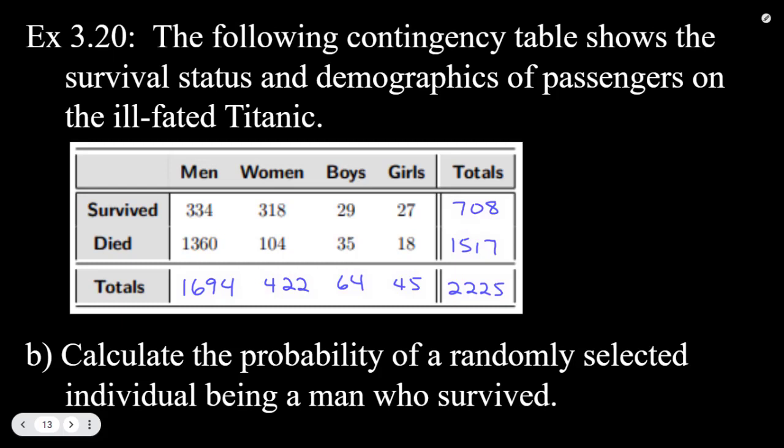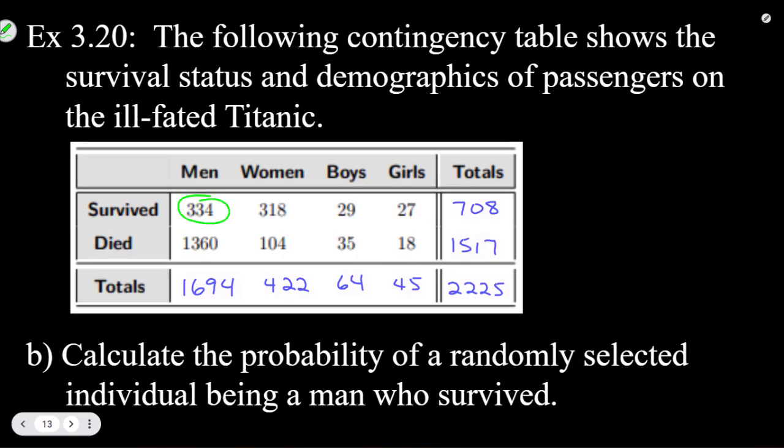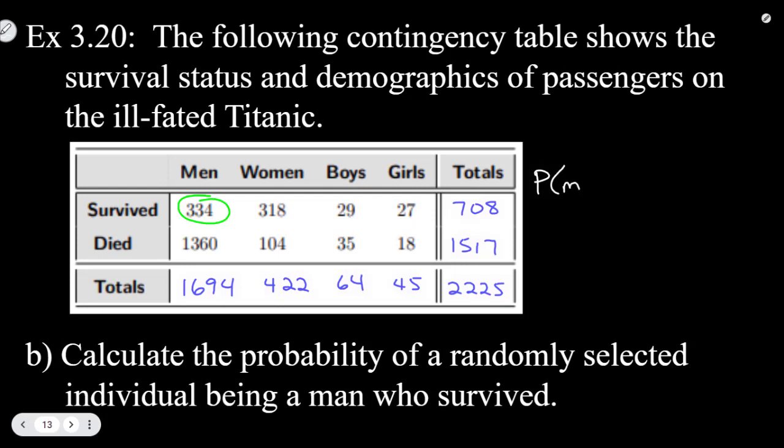Part B, we're going to calculate the probability of a randomly selected individual being a man who survived. So in our table, the men who survived are listed right here. So probability of man who survived. And when they give us a table like this, we don't have to do all the formulas, we can just look at the table.